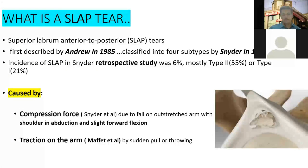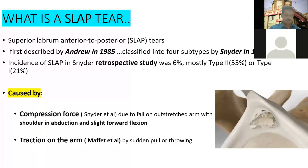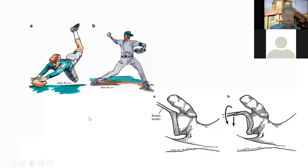What would be the mechanism? Two mechanisms have been proposed. One is a compression force, where the person falls onto an outstretched hand, forcing the head of the humerus and causing a shearing force on the superior labrum. Another important mechanism is traction on the arm, described by Maffet et al — a sudden pull or throwing of an object leading to traction on the biceps anchor.